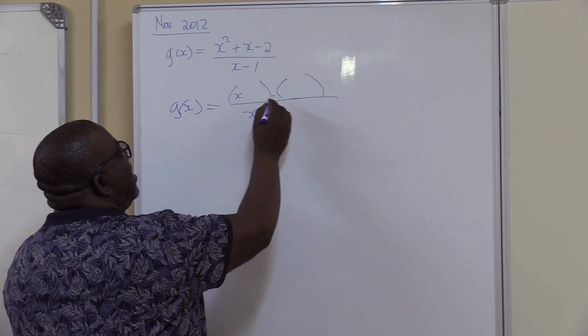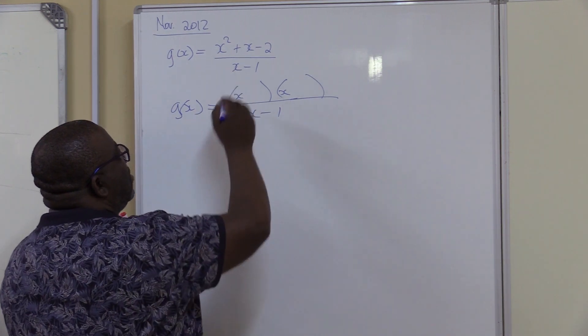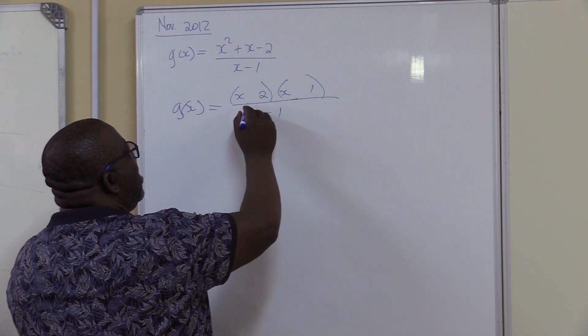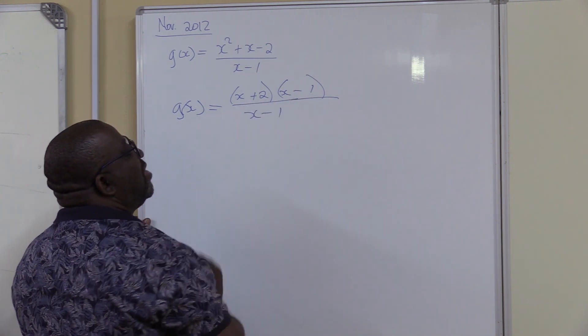So I've got x and x, factors of that one. Factors of 2, it is 2 and 1. To get positive there, the bigger one must be positive, this one must be negative.